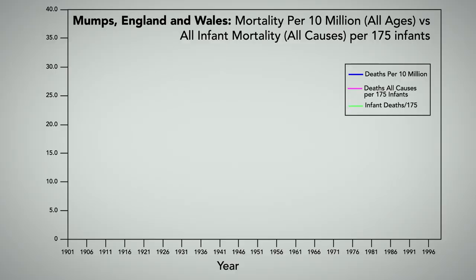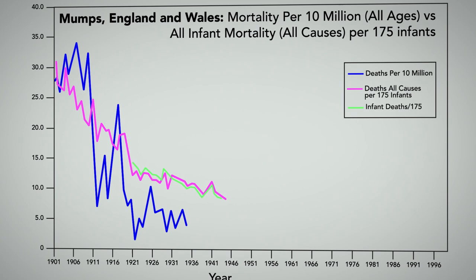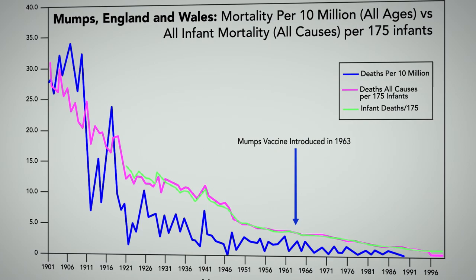Mumps was never a major killer, but nonetheless the pattern of decline in mortality, both in the United States and the UK, is exactly the same — falling well in advance of the vaccine being introduced.